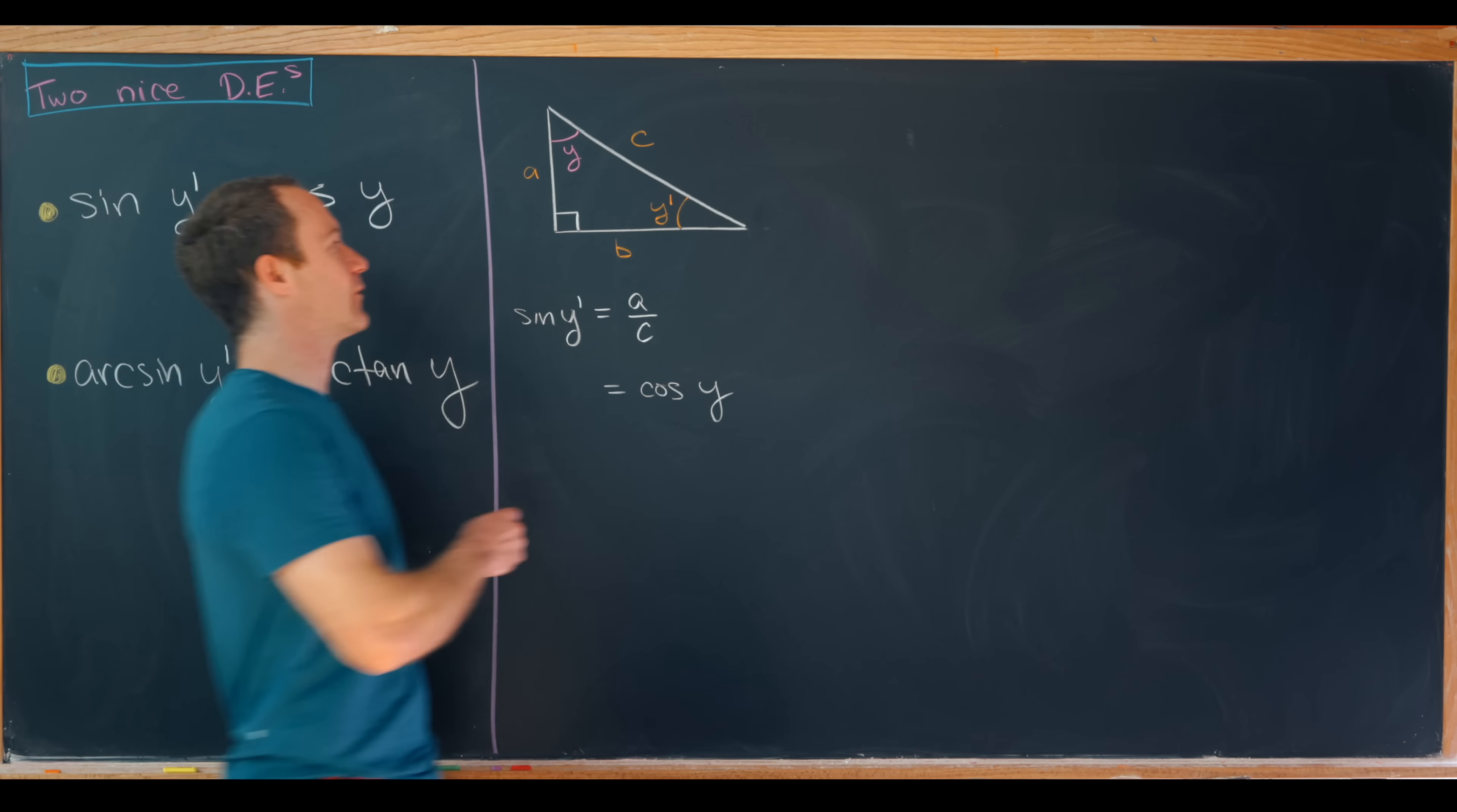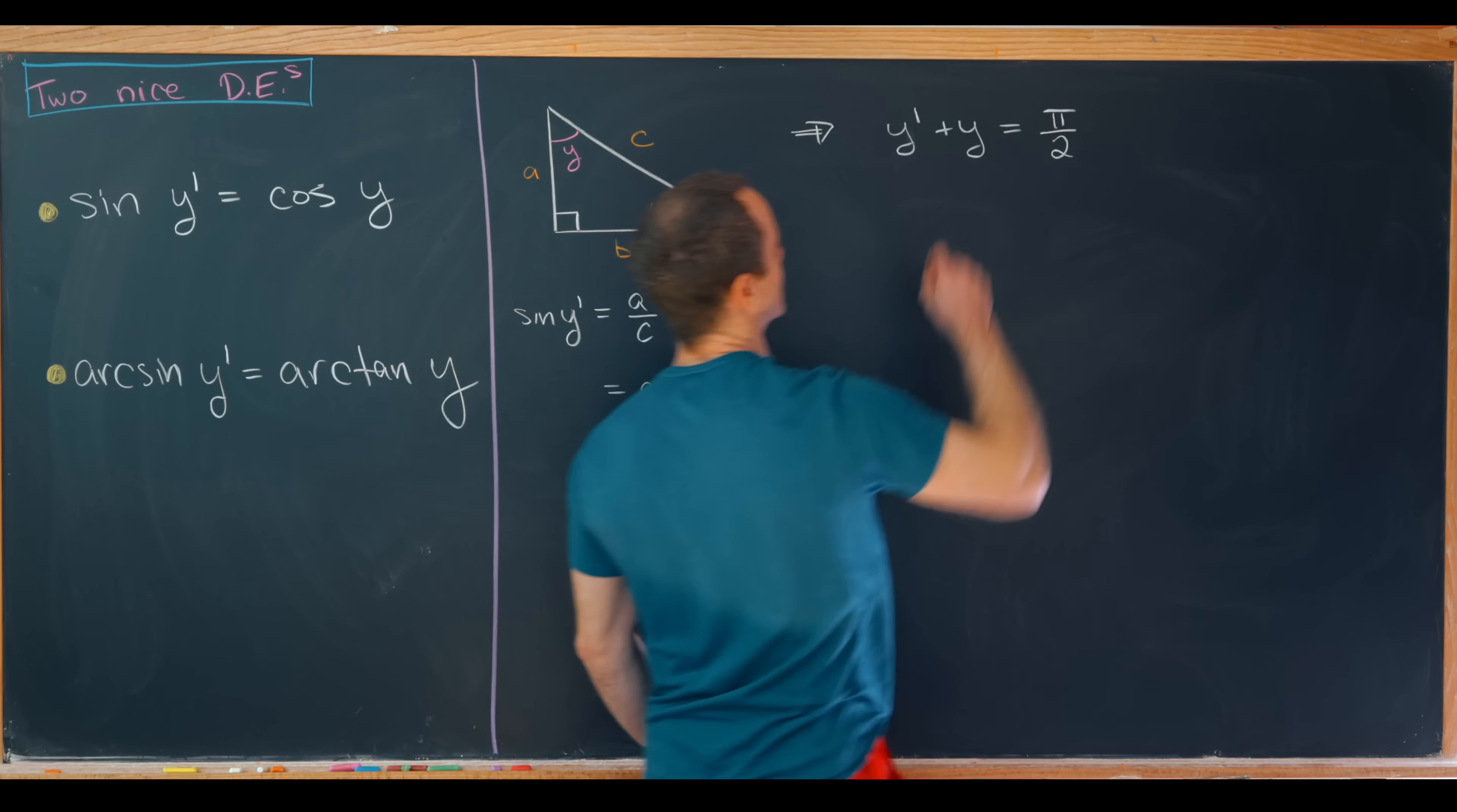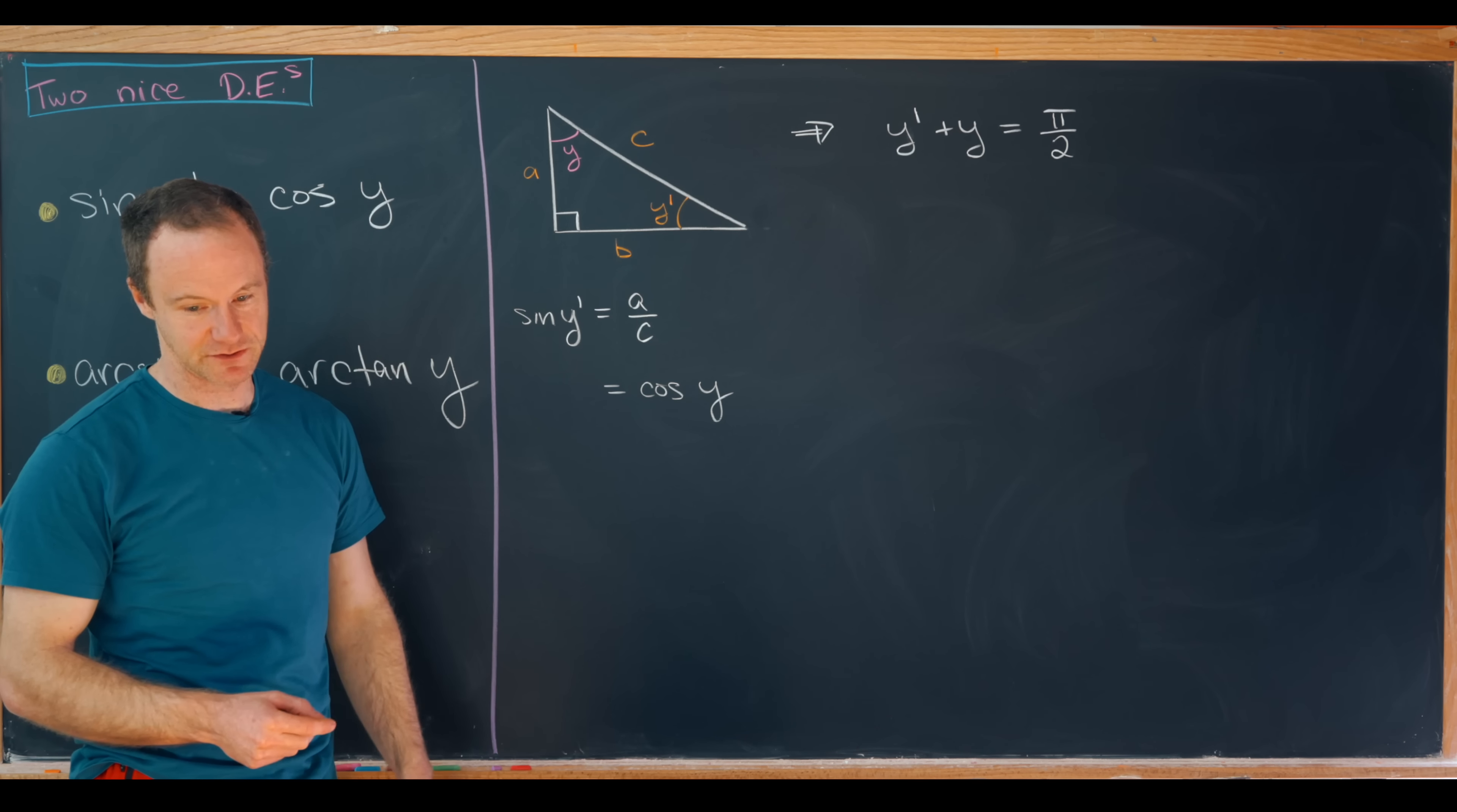Using the angle sum formula for a triangle, that tells us that y prime plus y is in fact equal to pi over 2. That's because we need y prime plus y plus this right angle to equal pi, and this right angle has measurement pi over 2.